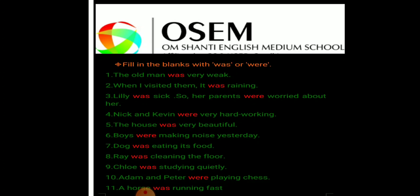Four: Nick and Kevin were very hardworking — Nick and Kevin, plural noun, that's why we have to use were. Five: The house was very beautiful — the house, singular, that's why was. Six: Boys were making noise yesterday — boys, plural, that's why were.